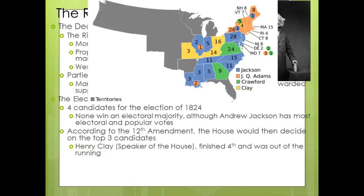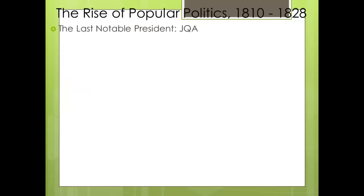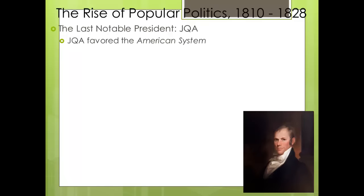Unfortunately, Henry Clay is not allowed to be voted on in the House since he finished fourth, but he is Speaker of the House and has a lot of influence. He threw his support behind John Quincy Adams, many states followed, and Adams becomes president. Henry Clay becomes his secretary of state — important because at that time the secretary of state was seen as a stepping stone to the presidency, as had been the case for John Quincy Adams, James Monroe, James Madison, and Thomas Jefferson.